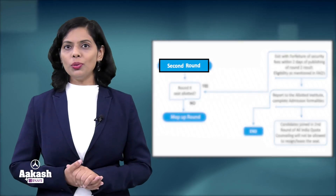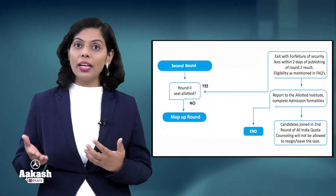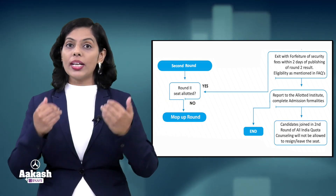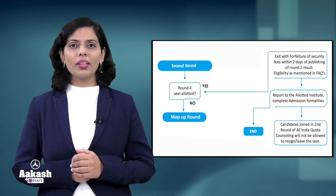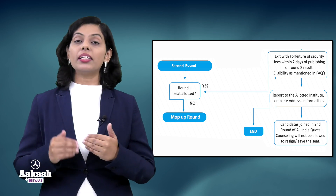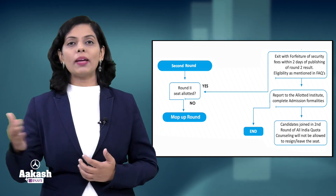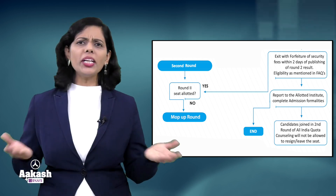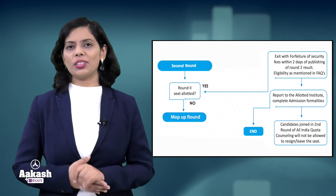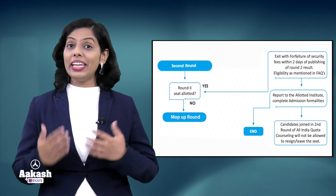For Round 2, once again you have to go to the MCC website for choice filling. The choices from Round 1 are null and void, so you have to choose again, lock your choices, and submit. Wait two to three days and you will get the college allocation list again. If you are getting a college in Round 2 and willing to take admission, report to the respective college with your original documents. If you don't want to report to the allotted college, you are eligible to exit but will forfeit your security amount. After joining a college in Round 2, you are not eligible for any further round of counseling.